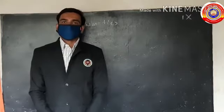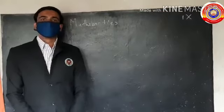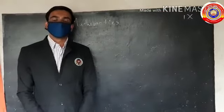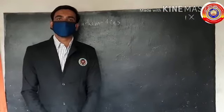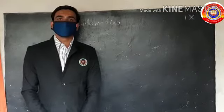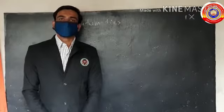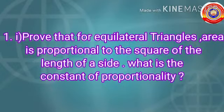Hi students, welcome back. Today we consider questions on page number 189. Read the first question: prove that for equilateral triangles, area is proportional to the square of the length of a side.